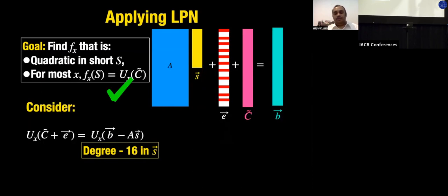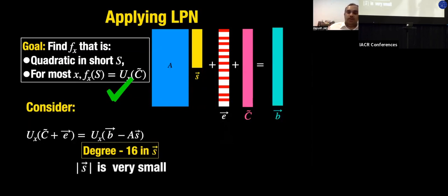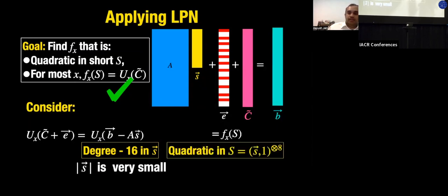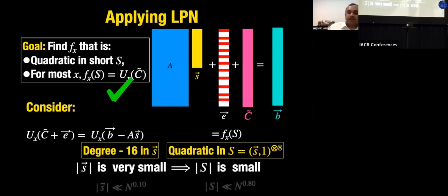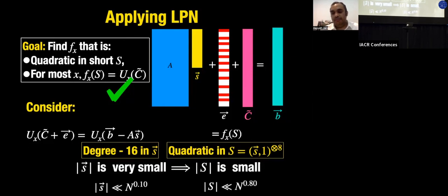We don't care about degree in b and A since constant degrees are fine. Since s is small, capital S is also small — if dimension of s is n^{0.1}, then capital S has dimension at most n^{0.8}. This completes the argument for why we can find a polynomial that approximately computes U_x on most inputs x.